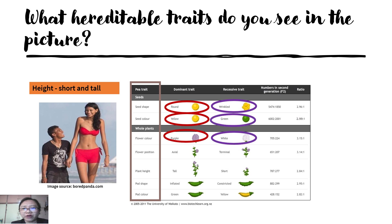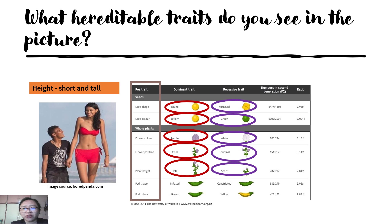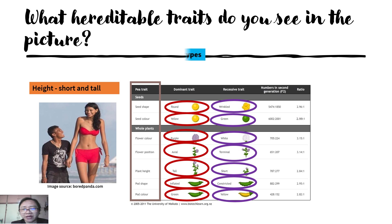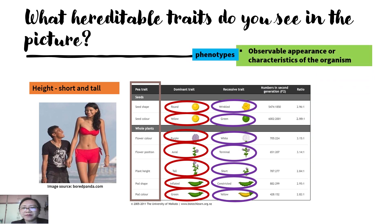In terms of seed color, it could be purple or white. In terms of flower position, it could be axial or terminal. In terms of plant height, it could be tall or short. In terms of pod shape, it could be inflated or constricted. And in terms of pod color, it could be green or yellow. All of these are observable traits, that's why they are called phenotypes — the observable appearance or characteristics of the organism.